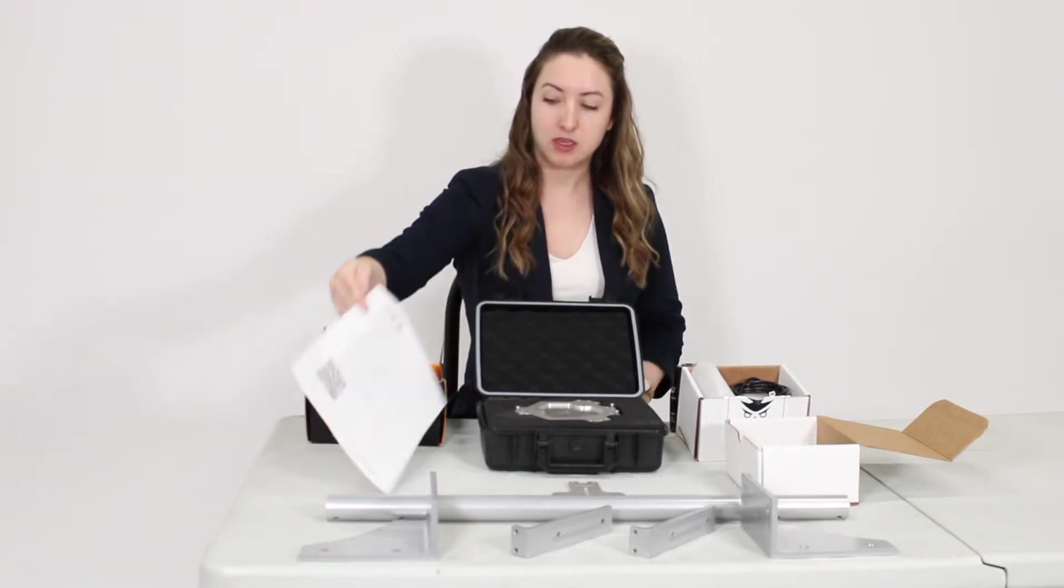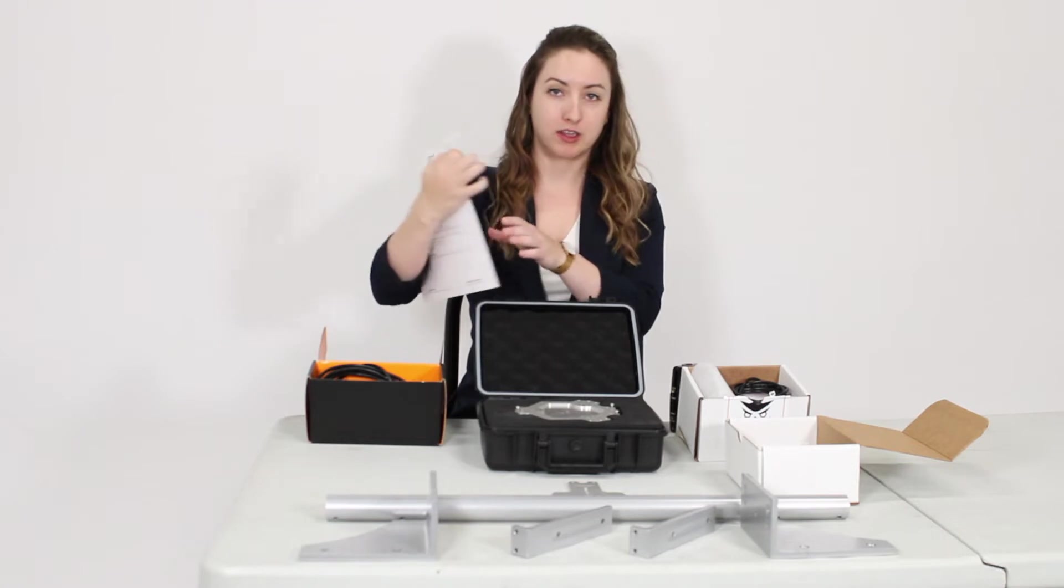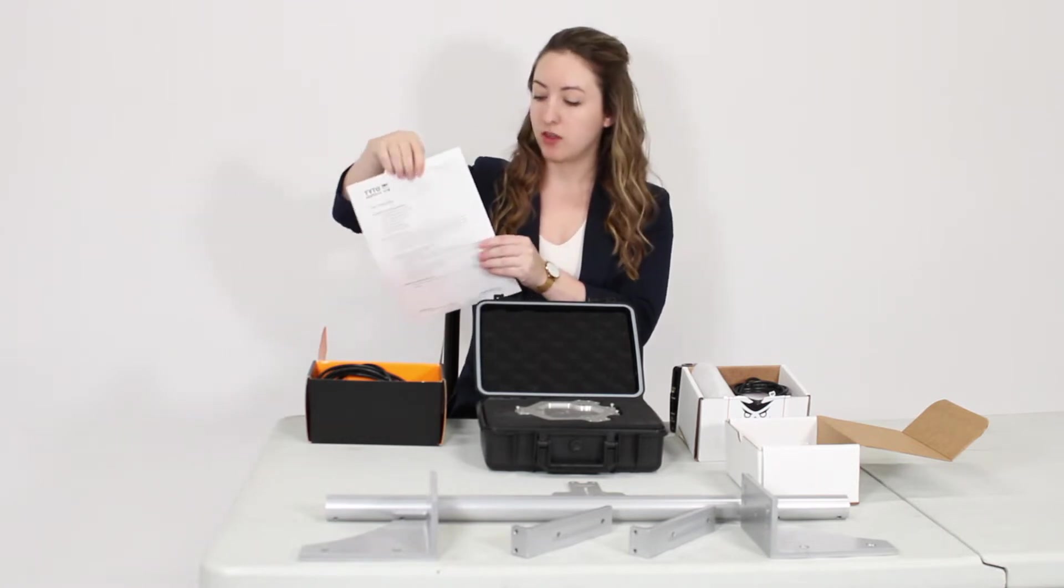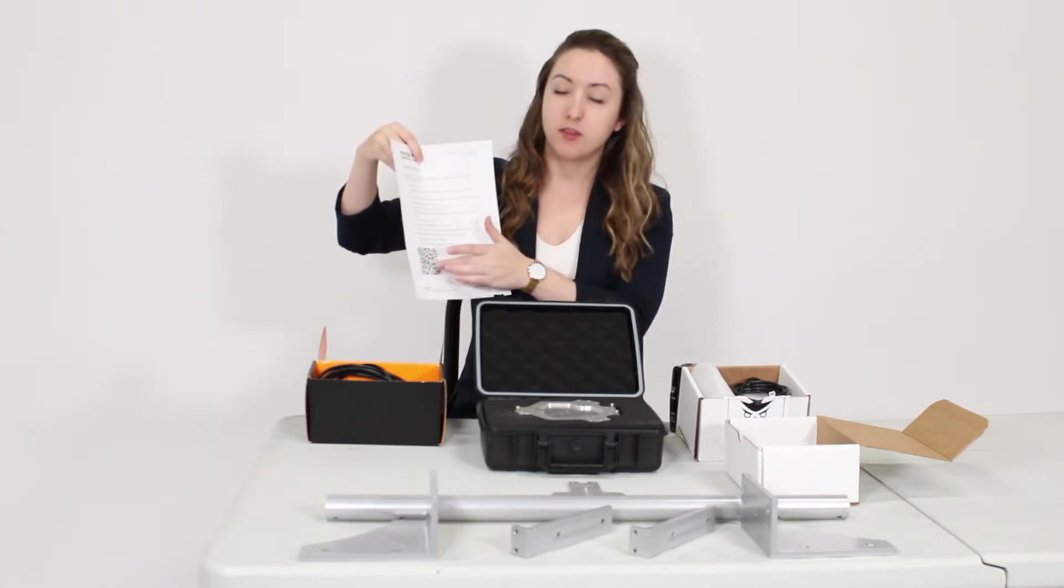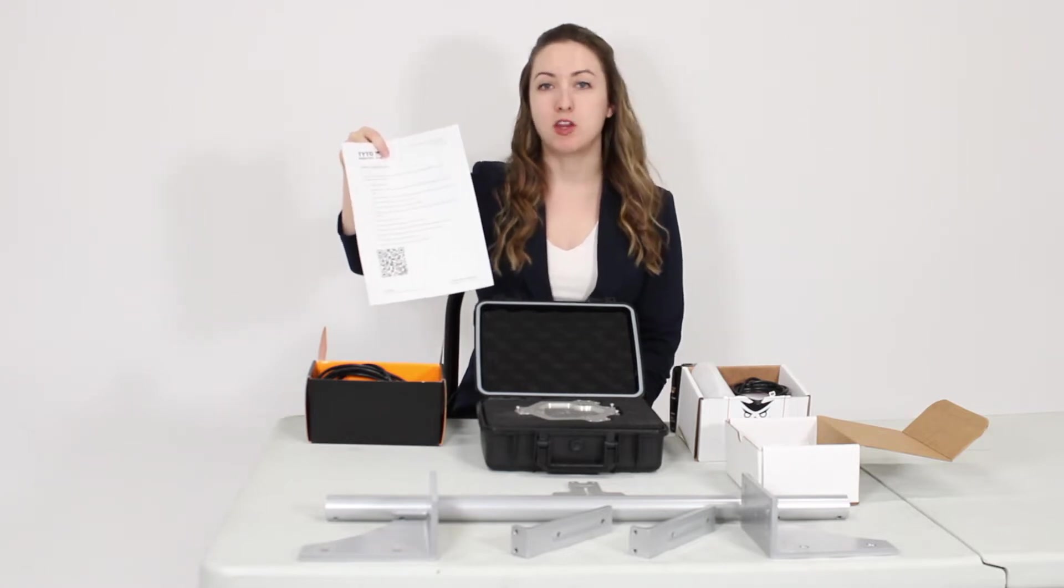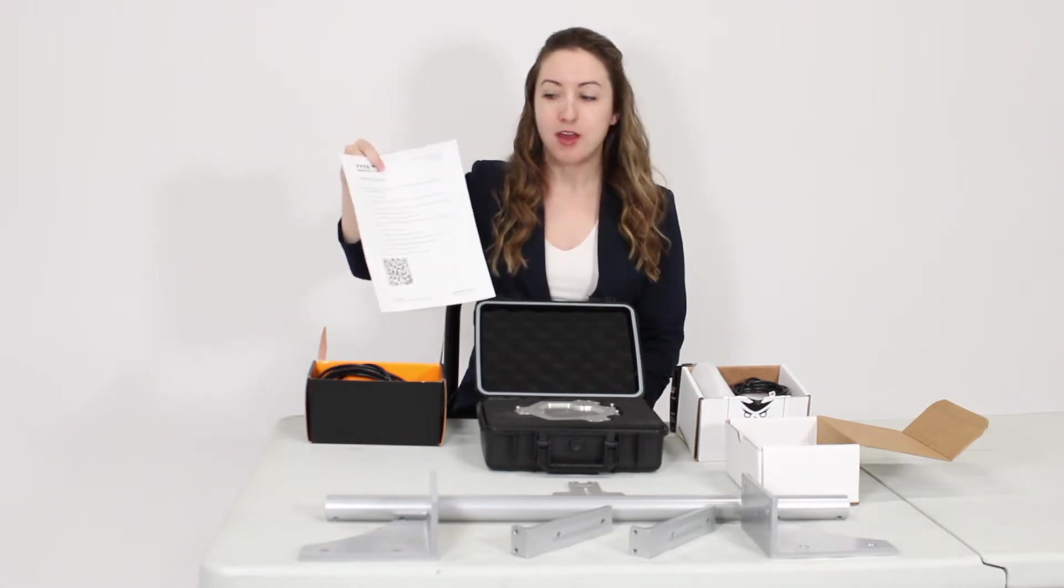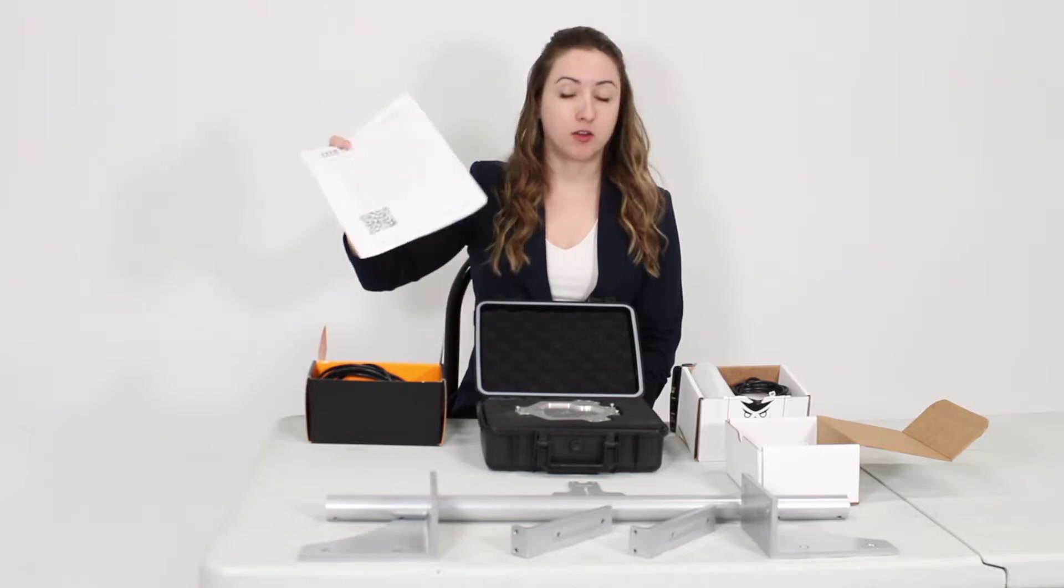The first thing we can look at is the safety guidelines and item checklist. On the front here you'll see that there is a QR code. This will take you to the Tider Robotics website to the manuals and data sheet center. There you can find the Flight Stand and download all of its documentation.